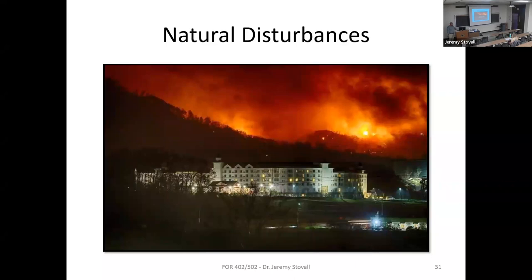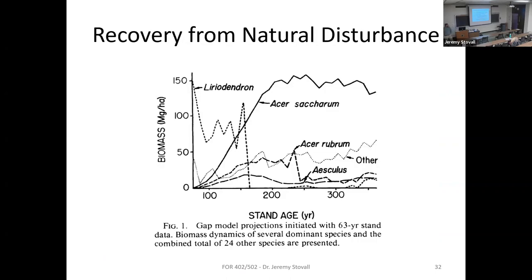As stands recover from natural disturbance, you see all sorts of interesting things playing out. There are questions like: is sugar maple a late-successional species? You see Acer saccharum dominant years after disturbance, but is it really late-successional? Because it was here the whole time from the initiation of the disturbance. Some things like yellow poplar — this figure shows it crashing out after about 100 years. But we're going to see stands in the park where yellow poplar doesn't drop out. They can live a long time and get huge — we'll see six-foot DBH yellow poplars in places, which is pretty remarkable to see a tree that big in the eastern U.S.